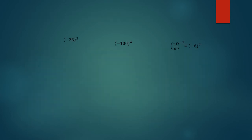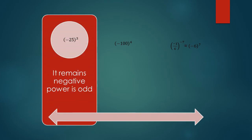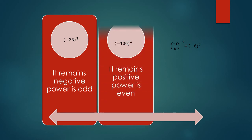There are some examples. First is minus 25 to the power 3. Power is odd, so it remains negative. Second one is minus 100 to the power 4. Now, power is even, so it remains positive.